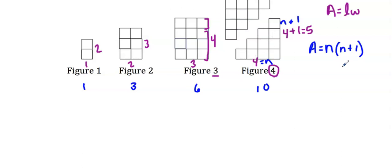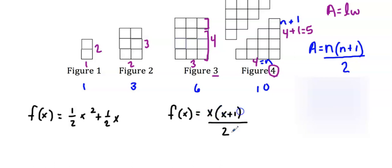What I need to do is just divide by two to get to my original figure. On the previous screen, the equation was f(x) = 1/2 x squared plus 1/2 x. Now we're getting f(x) = x times (x+1) divided by two.